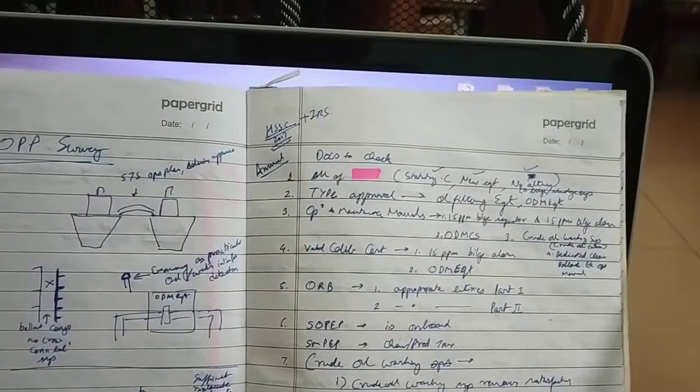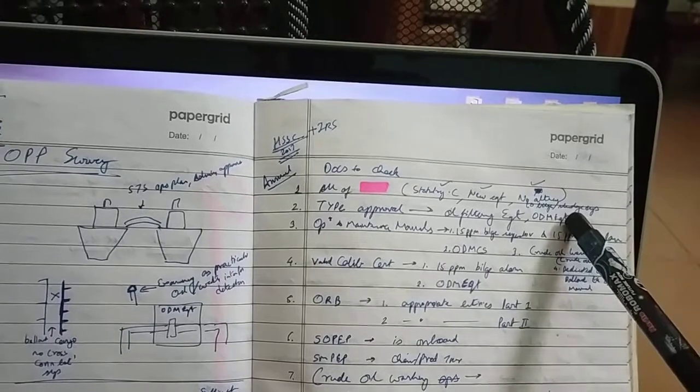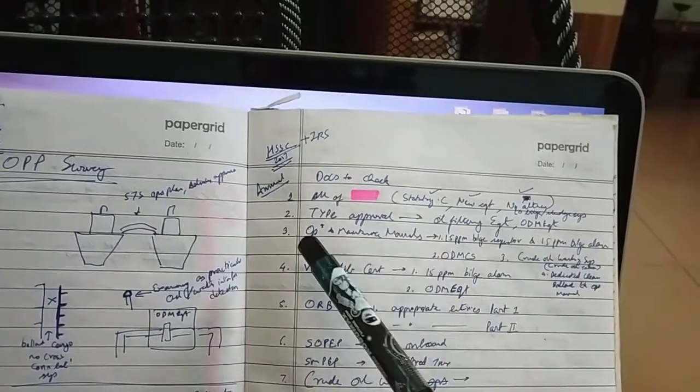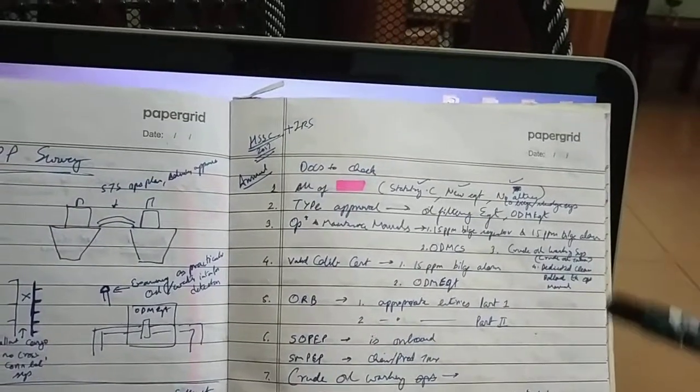Type approval - since this is an IOPP survey, type approval of your oil filtering equipment, ODM equipment, these have to be checked. Operations manual, maintenance manual - so these are the documents.